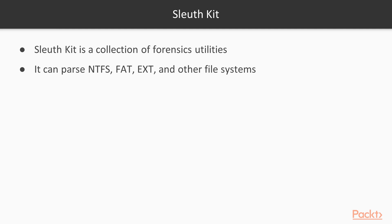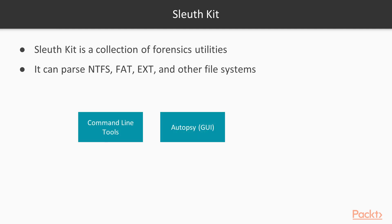Now, talking about what tools are available, there are two types: command line tools and GUI tools. The GUI tool is in the form of Autopsy. Autopsy is available in Windows as well as in Kali Linux, and it is open source. So Sleuth Kit can be used with Autopsy or with the command line tools.